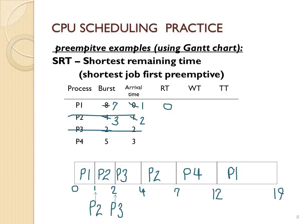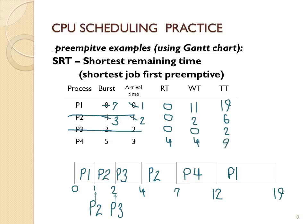P1 arrived at time 0, first got on the CPU at time 0, so response time is 0. P2 arrived at time 1, first got on the CPU at time 1, so response time is 0. P3 also has a response time of 0, and P4 has a response time of 4. P1 has a turnaround time of 19 and a wait time of 11 — 19 time units active, 11 of those waiting. P2 has a turnaround time of 6 and wait time of 2. P3 finished at time 4, arrived at time 2, so turnaround time of 2 with no waiting. P4 has a turnaround time of 9 and waited 4 time units. Add each metric up and divide by 4 to get the averages.